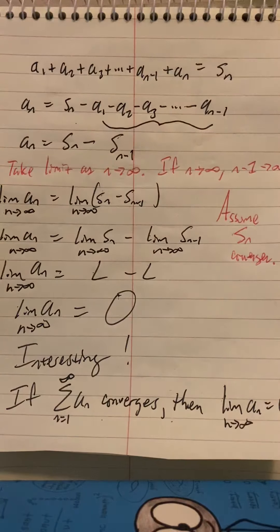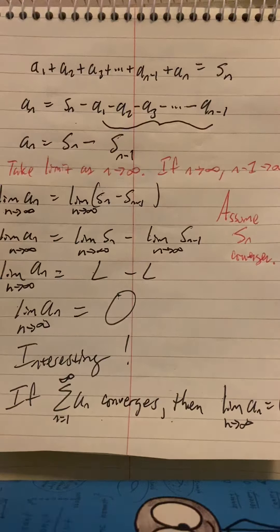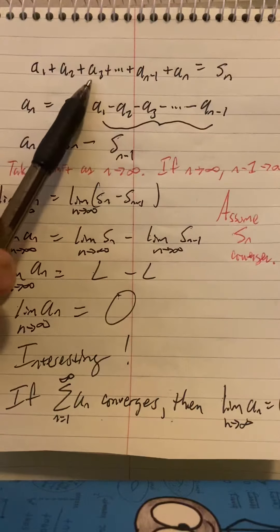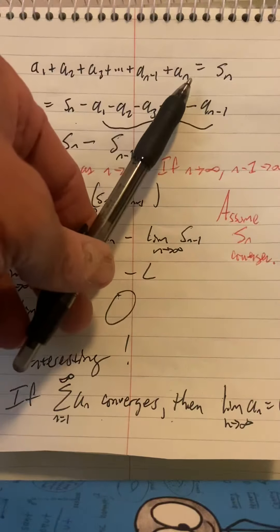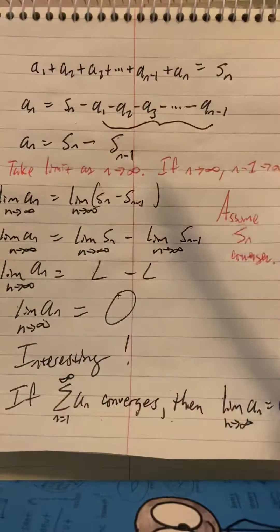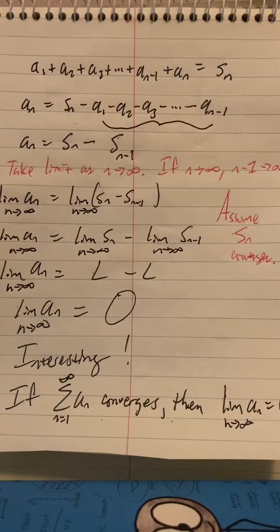Let's look at a summation. We have the sequence a sub n and we're adding up all of its terms. So we have a1 plus a2 plus a3 and so forth all the way out to a sub n. And since we're adding up all the terms of this sequence, we have a series.